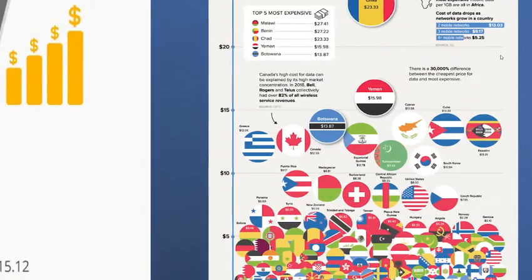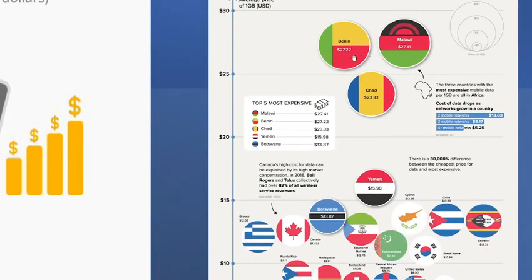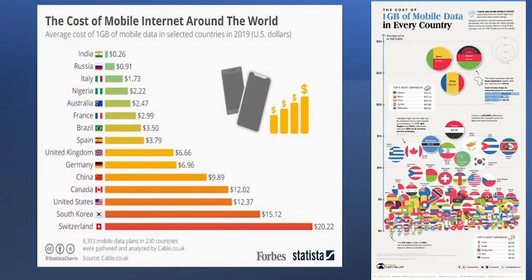There are some good things though. For the top three most expensive countries, they give a reason: these countries have only one operator. If you have multiple operators, the cost can generally go down. They say that for two mobile networks in a country, the average cost doesn't go above $13; with three it goes lower, and then lower still. This is a kind of economy of scale — the pricing can be different based on competition.